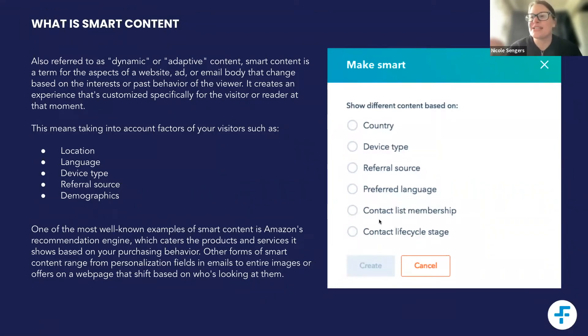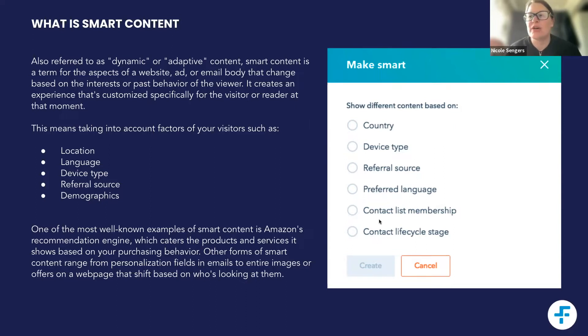Using smart content ranges from that personalization field, like first name or company name, to images, different products, showing different content, and calls to action.